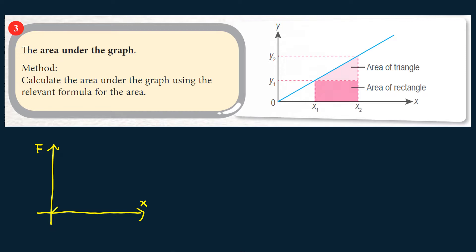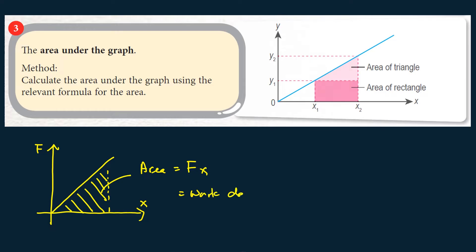If we get a straight line and calculate the area under the graph, this area is equal to the product of F and x, which is F times x. In physics, work done is equal to force times distance moved, so F times x equals work done. Therefore, from this graph, we can calculate the work done to stretch the spring by calculating the area under the graph.